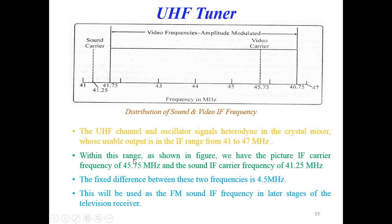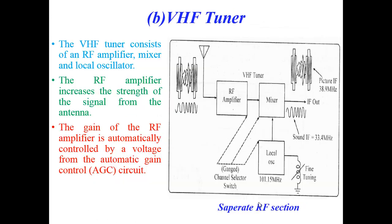The fixed difference between these two IF frequencies is 4.5 MHz. This 4.5 MHz will be used as the FM sound IF frequency in the later stages of the television receiver.